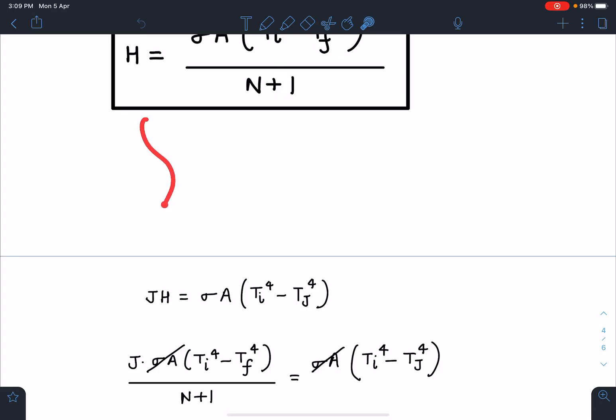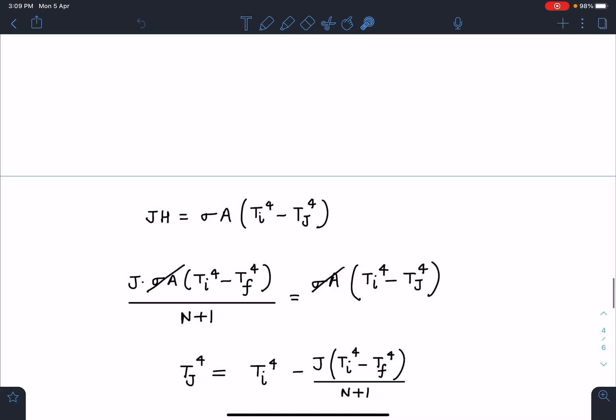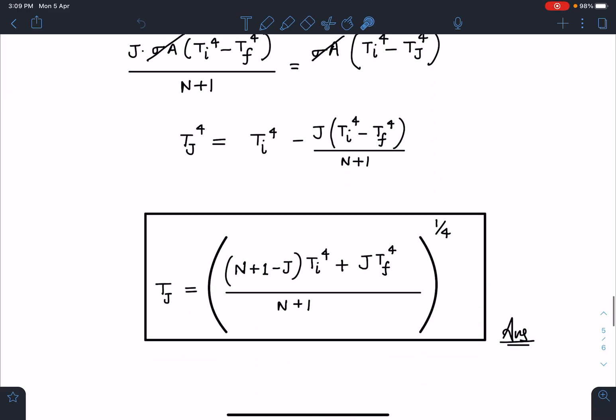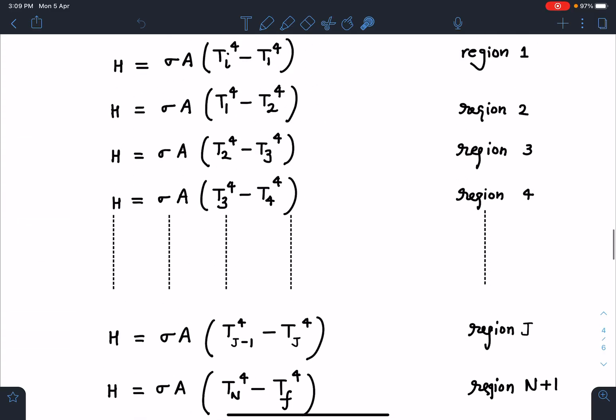If you substitute the value of H and simplify, a lot of terms are going to get cancelled. TJ I can take separately, that is going to be Ti to the power 4 minus J times Ti to the power 4 minus Tf to the power 4 divided by N plus 1. Further if I simplify, temperature of jth plate is going to be N plus 1 minus J times Ti to the power 4 plus J times T final to the power 4 by N plus 1. This is my final answer for this question and this is how you will deal with parallel plates in radiation.